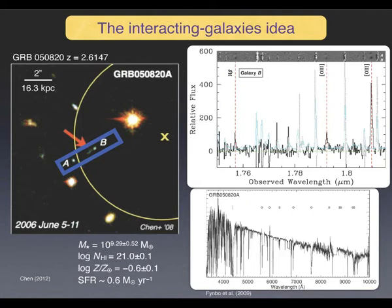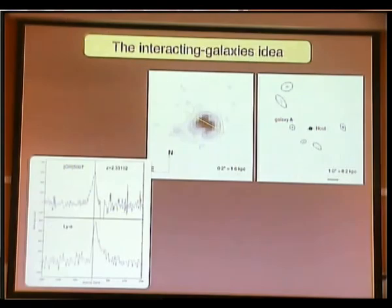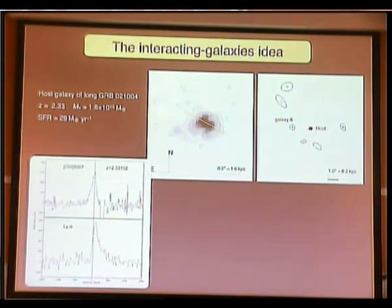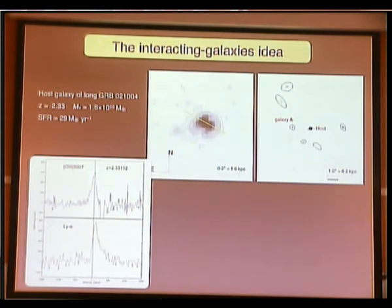Here are other targets — also at high redshift 2.6. We have the GRB happening where the arrow is pointing, and you have two objects. This is the afterglow spectrum with HI absorption and lots of metals. You observe objects A and B with emission lines at the same redshift as the GRB afterglow, separated by about 20 kiloparsec. These are interacting systems. Parameters for the host galaxy: HI is very high, metallicity is low (expected for high redshift), star formation rate is not particularly high.